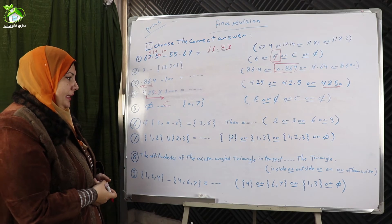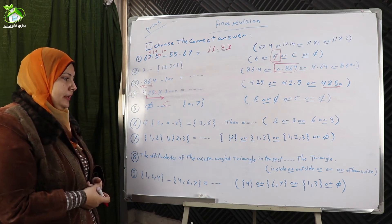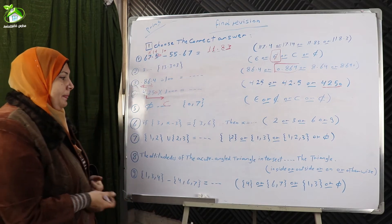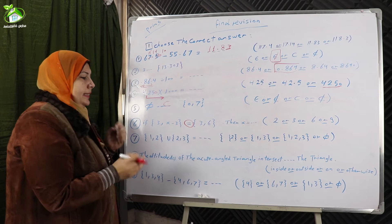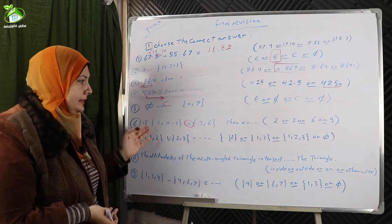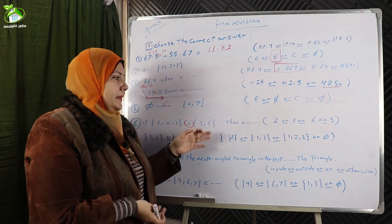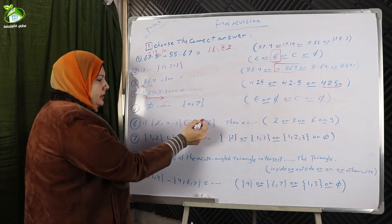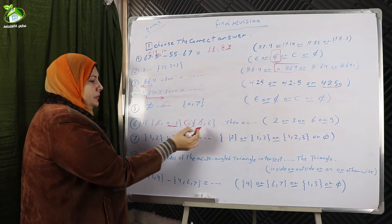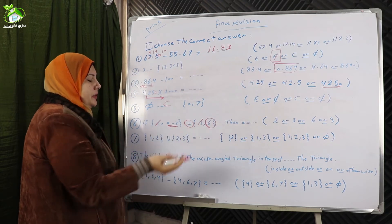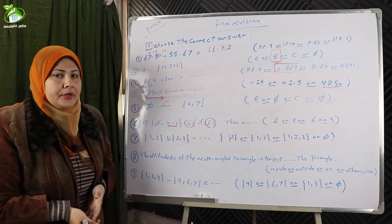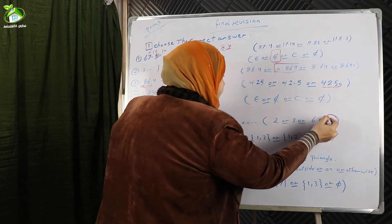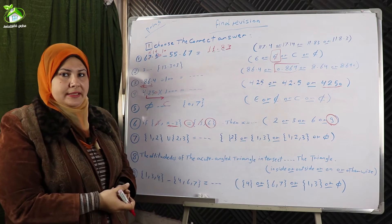Number six: if the set {3, x−3} equals the set {3, 6}, find x. Equality between two sets means all elements in one set equal all elements in the other. Here three equals three, so x minus three must equal six. Therefore x equals nine, since nine minus three equals six.